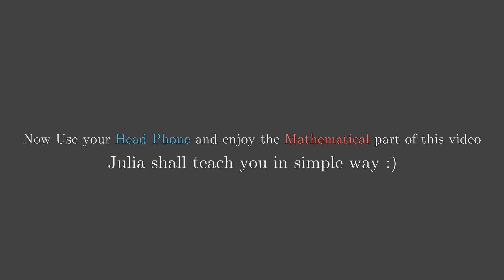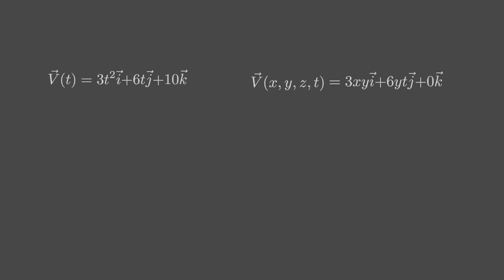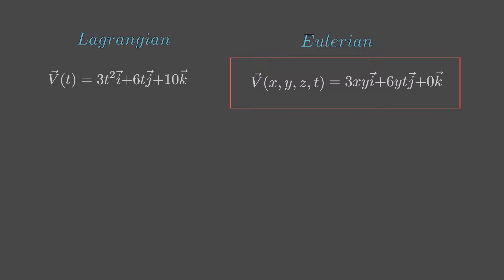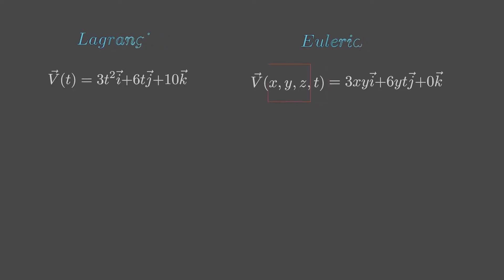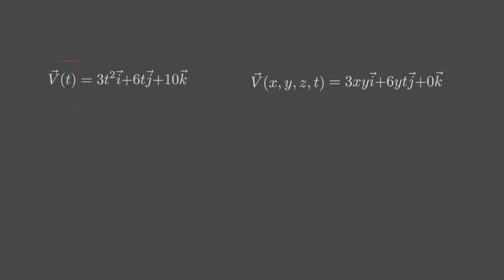Take a look at every scalar or vector field equation written on your fluid mechanics textbook. Most of them are written in Eulerian form. These fields are in Eulerian form if the vector field is a function of both time and space, or else they might be in Lagrangian form if it is a function of time only.